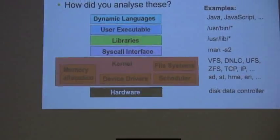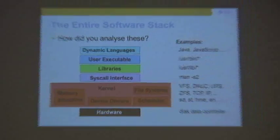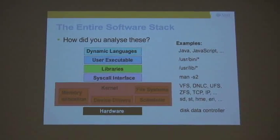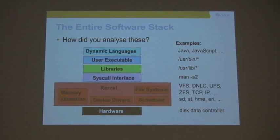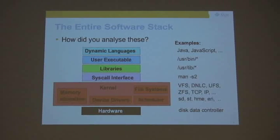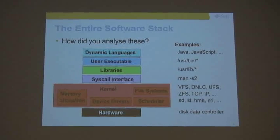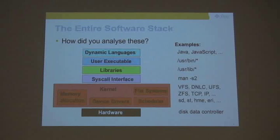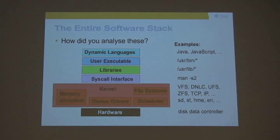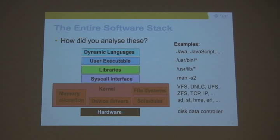So back to the presentation. You might have seen this before — I've used this diagram in a bunch of places. How did you analyze these before? It varies on your operating system. Dynamic languages like Java, JavaScript, Perl, Python — you use whatever debugger comes with it, or you edit the code and put a bunch of printf statements in it. User executables, user bin star, things that are compiled.